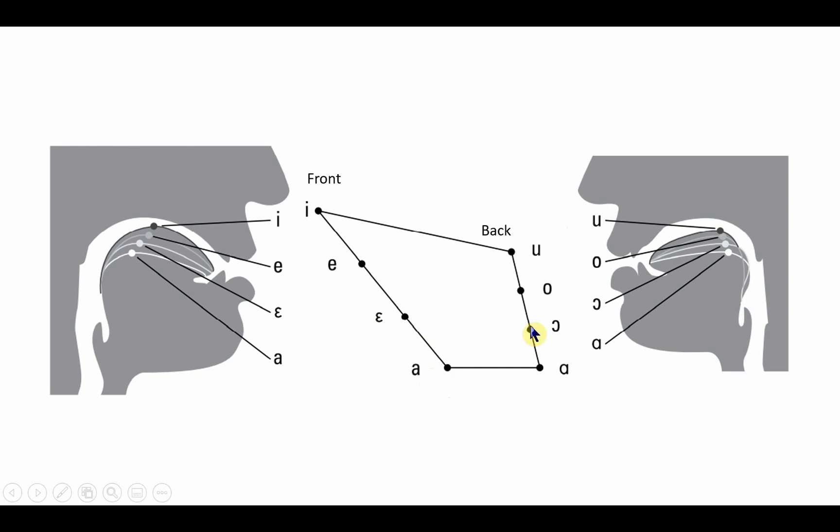Same is the case with the back vowels. The vowels will be the high vowels, the vowels will be the low vowels. And this O will be the mid-high vowels, and this will be the mid-low vowels.